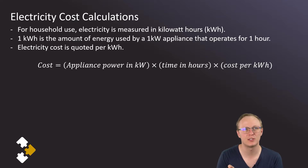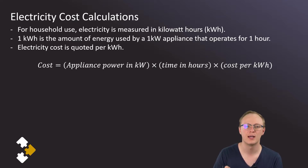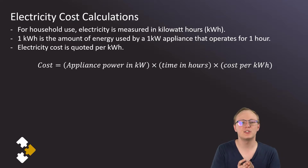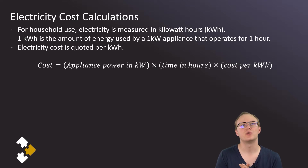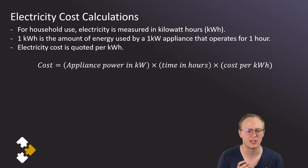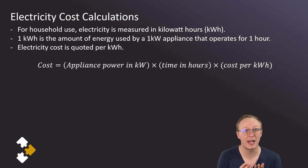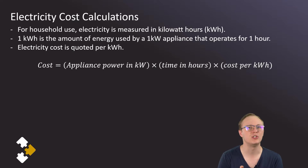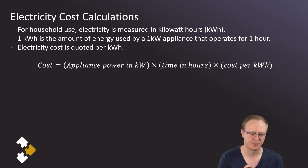So what a one-kilowatt appliance would use in an hour is a kilowatt hour. For example, a kettle is usually about a thousand watts — one kilowatt — so if you have a kettle on for a whole hour, that should use one kilowatt hour of electricity.